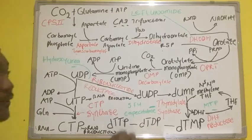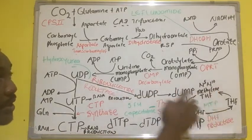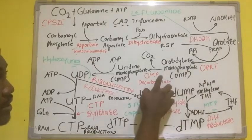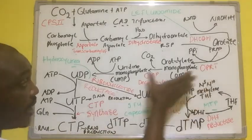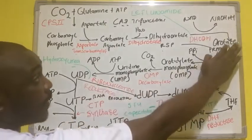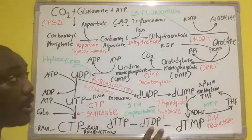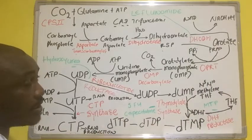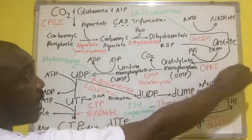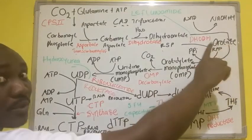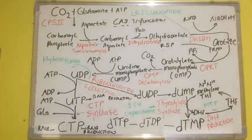If there is a defect in UMP synthase — either the OMP decarboxylase or the OPRT component — this reaction will not continue, and there will be an accumulation of orotic acid. This leads to orotic aciduria. A defect in either or both components of UMP synthase causes accumulation of orotic acid, resulting in orotic aciduria.